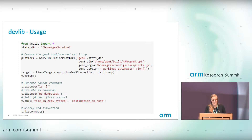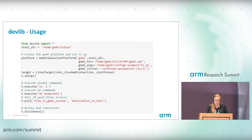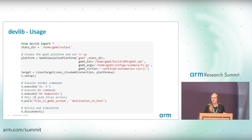During setup, the simulation is started and some default binaries like Busybox are pushed onto GEM5. Once the simulation is set up, you can execute normal commands — for example, running ls. You can also execute M5 commands, which handle GEM5 housekeeping, such as dumping all statistics right now. Then there's pull and push files — you can pull a file from the GEM5 system to a destination on the host. There are many more commands, like install binary, which pushes the file, checks it's there, makes it executable, and verifies everything. At the end of the simulation, you nicely disconnect and it will do M5 exit for you, rounding everything off for a cleanly ended simulation.